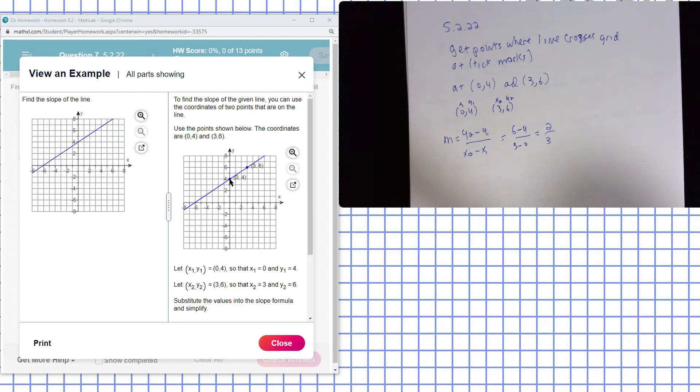One point is at 0,4. Another point where it crosses the line is at 3,6. So I have two points. I can find the slope of the line using those two points.